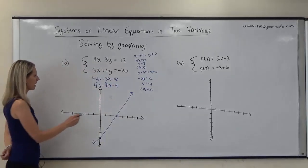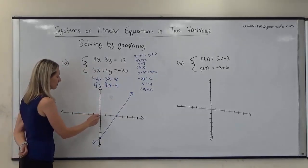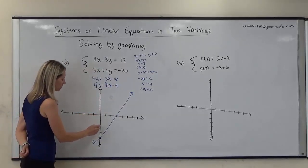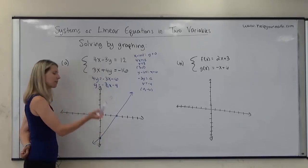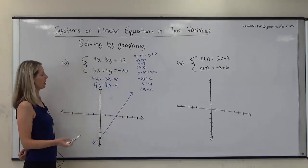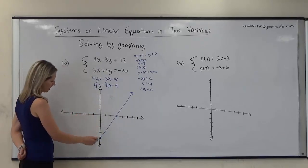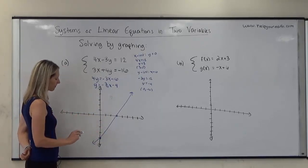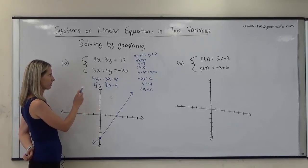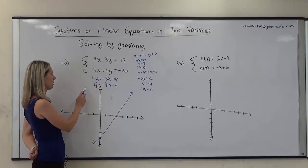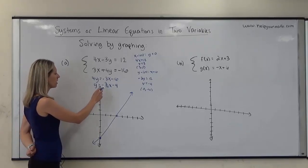So for this equation, I have a y-intercept of negative 4 — and hey, that's where the other graph was. Let's go ahead and graph this line, although we do already know the answer to our question here.